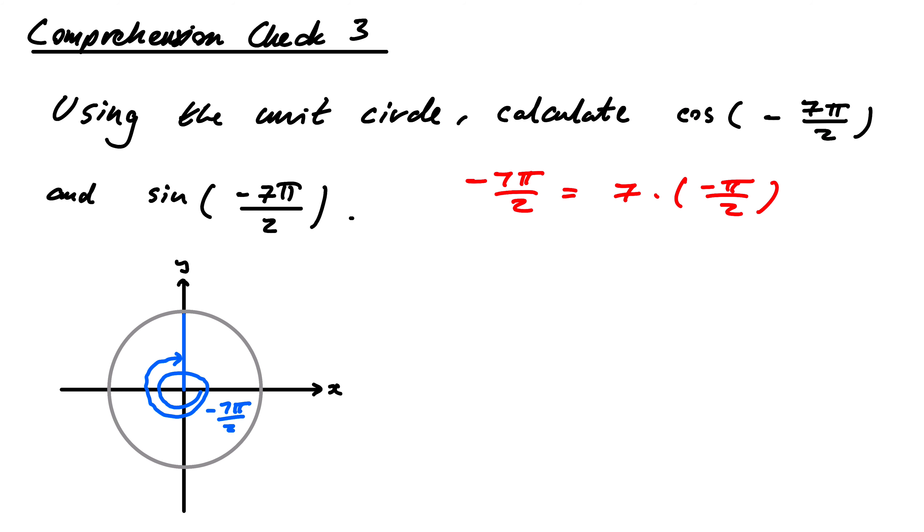What is that position? That position is 0, 1. So, instantly I know cosine of minus 7π over 2. That's the x-coordinate. That's equal to 0.